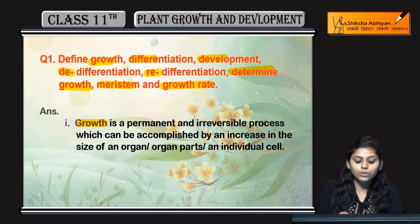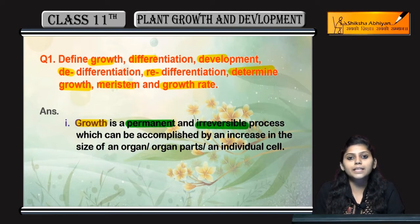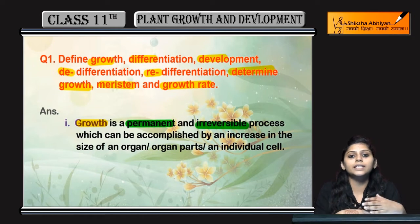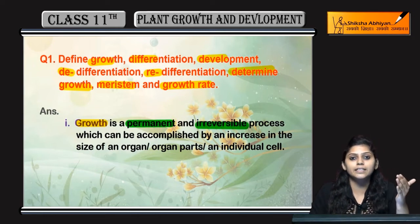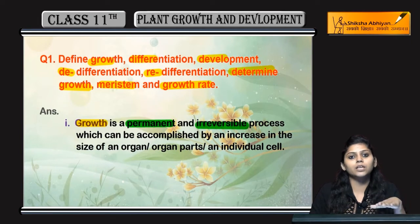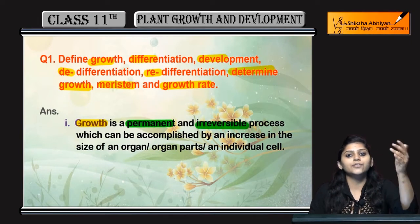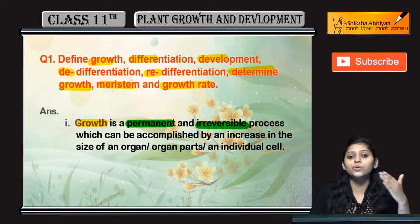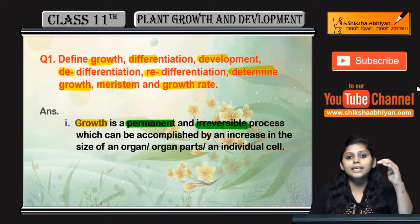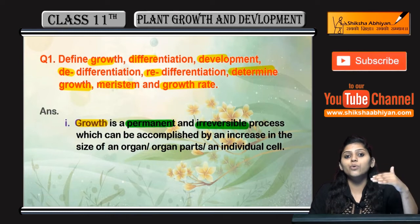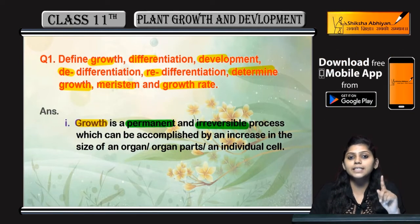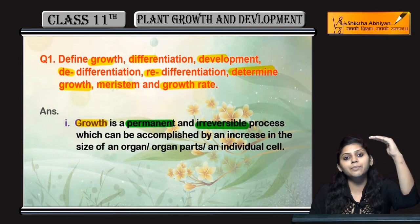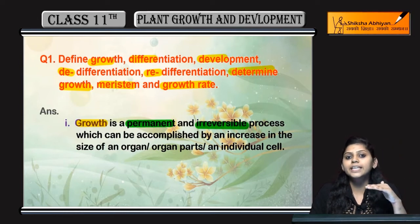Growth kya hota hai? Growth is a permanent, irreversible process — means permanent hai aur reverse nahi ho sakti. Agar kisi ek plant ne kuch height attain kar li hai, to kya aapne kabhi dekha hai ki woh plant pehle apni height badhata hai, then phir choti kar deta hai? Nahi, aisa nahi hota. Agar plant grow kar raha hai, to uski growth ek permanent process hai.